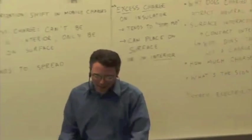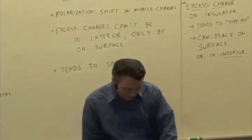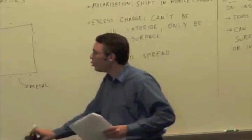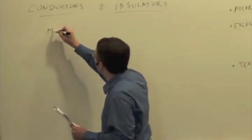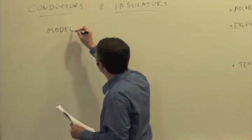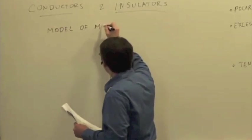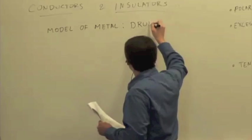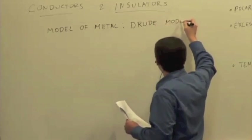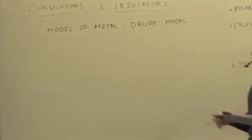We can quantify this a little bit by actually being more precise about our model of a metal. This is something called the Drude model, which is basically what we said. We're saying it's positively charged atomic cores.